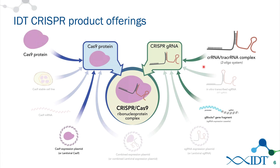We recommend the use of ribonucleoprotein complexes for several reasons. Introduction of the Cas9 protein complex together with the guide RNA complex gives immediate activity in your cell. It also reduces off-target effects, as the Cas9 protein and guide RNA complex are turned over — the protein loses most of its activity after 48 to 72 hours. Using RNPs gives a very easy workflow, high reproducibility, and no toxicity is observed.